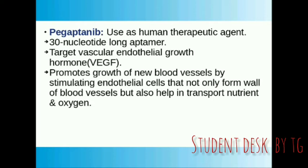Next, our next therapeutic agent is Pegaptanib — the 'T' is silent, so we say Pegaptanib. Pegaptanib is used as a human therapeutic agent. It is 30 nucleotides long. Its target is Vascular Endothelial Growth Factor, VEGF. It targets the formation of new blood vessels and endothelial cells. Endothelial cells help in transport of nutrients and oxygen.